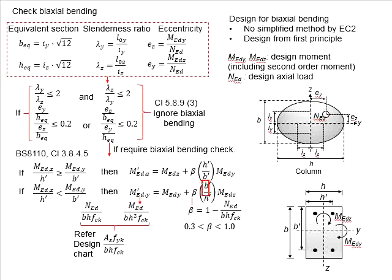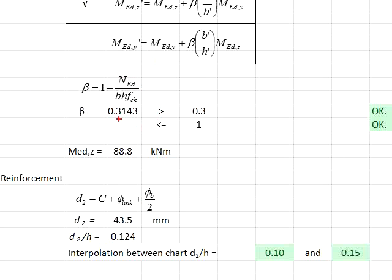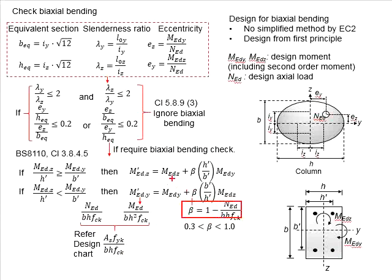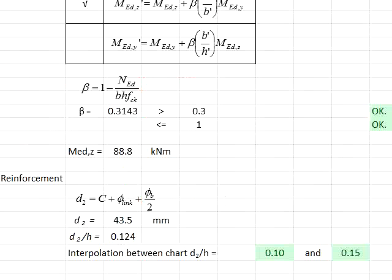So, you have b' and h'. You will need to determine the beta, which is given in this formula. Substitute the axial force into the formula here. In this formula, you will be able to determine your beta, and the beta has to range between 0.3 to 1.0. Based on the substitutions, the beta is equal to 0.3143. Substitute all the values into the equations. You will be able to determine M'Edz equals to 88.8 kilonewton-meters.